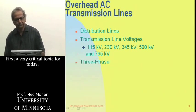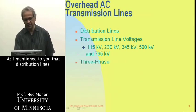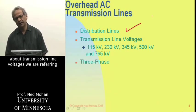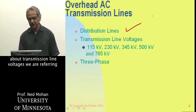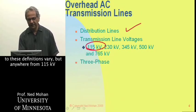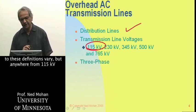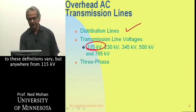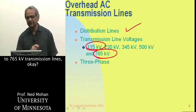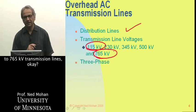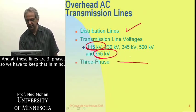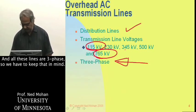There are distribution lines at lower voltages, but when we talk about transmission line voltages, these definitions vary — but anywhere from 115 kV to 765 kV are considered transmission lines. And all these lines are three-phase, so we have to keep that in mind.